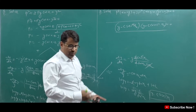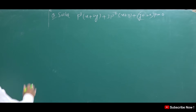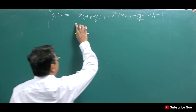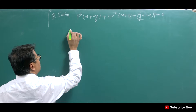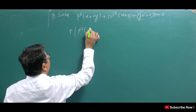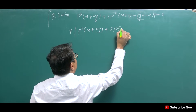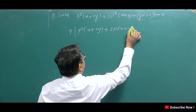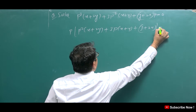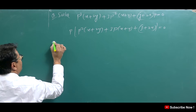The next question — the last one — has a cubic equation in p. We have p³ + p²(x + 2y) + p(3x + y) + (y + 2x) = 0, which we factor by taking p common from appropriate groups.